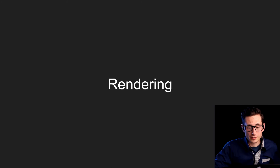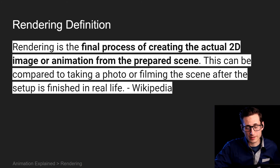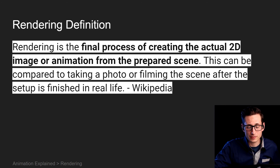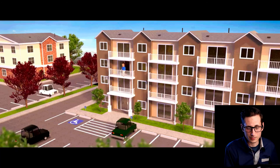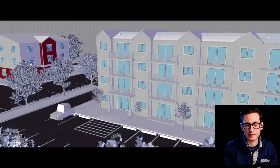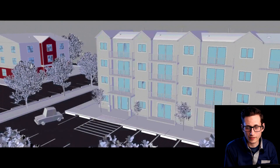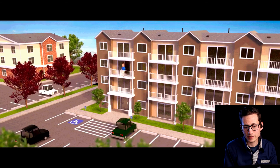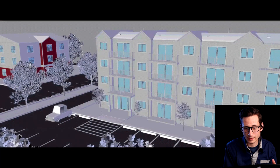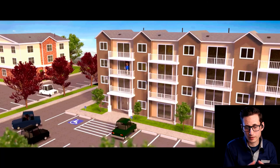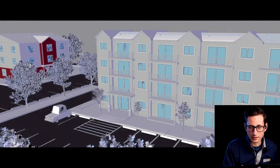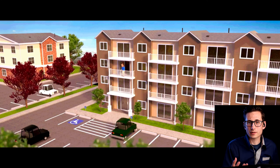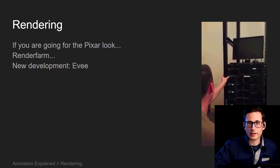Rendering is the process of creating the actual 2D image or animation from the prepared scene — comparable to taking a photo or filming a scene after setup is finished in real life. Better than a Wikipedia definition is the before-and-after shot: you've got the default gray look transitioning to the final rendered view. The computer is calculating what the lighting, textures, and colors look like — what happens when the sun shines through the window, what the leaves do — all the calculations to produce the final image.